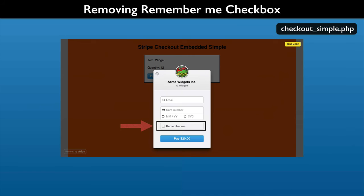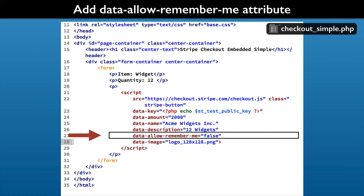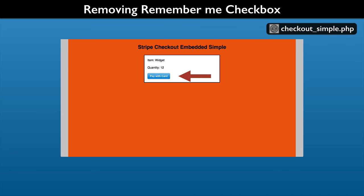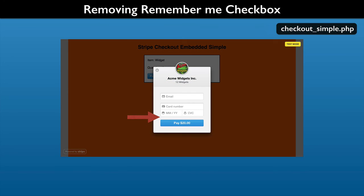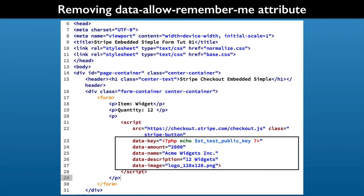You may find that you have an integration need that requires removing the Remember Me checkbox. So let's open the code and try that out. To do this, you need to add the Data Allow Remember Me attribute to the Stripe element and set its value to False. You can paste this from the second code snippet and then save. Reload the web page and click the Pay with Card button — now the Remember Me button is removed. Saving payment information is no longer possible for this form, but customers can still use their saved Stripe payment information if it was previously created. We will leave the Remember Me option in for the exercises, so you can remove the Data Allow Remember Me attribute in the script element.